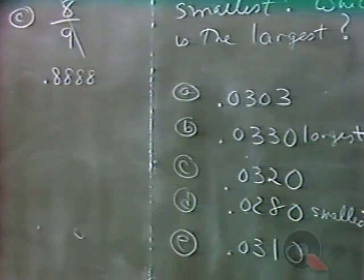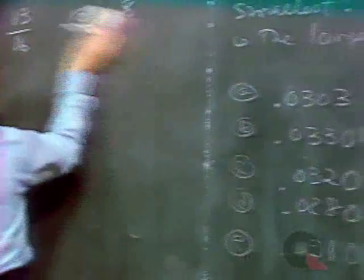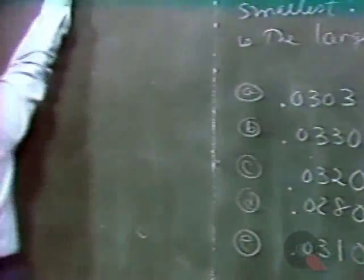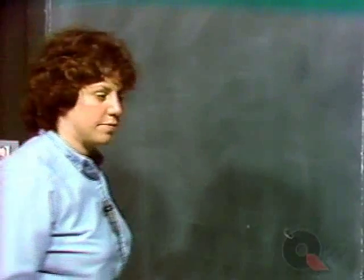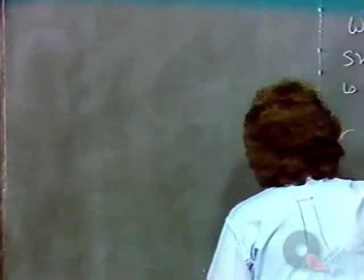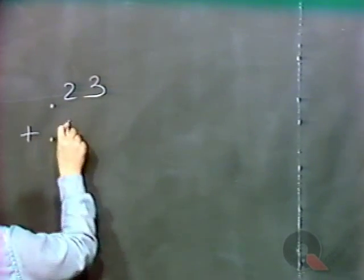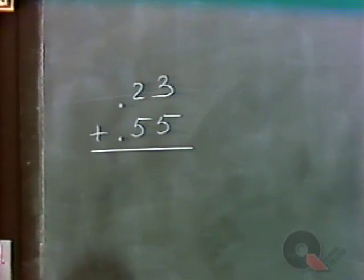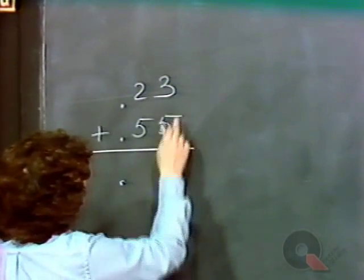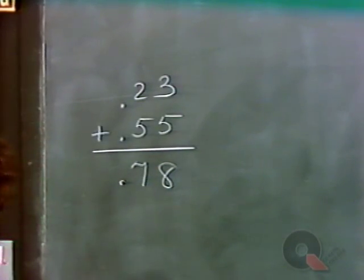The next kind of problem involves addition and subtraction of decimal numbers. These are not hard if you already know how to add and subtract whole numbers. The important thing is to line up the decimal points and add zeros if necessary, then add and subtract in columns. For example, adding .23 and .55: line up the decimal points, place the decimal point in the answer, and add — 3 plus 5 is 8, 2 plus 5 is 7 — giving .78.